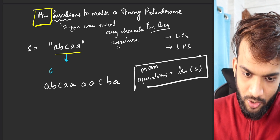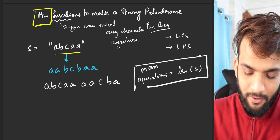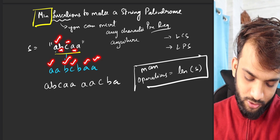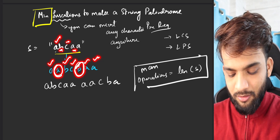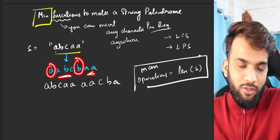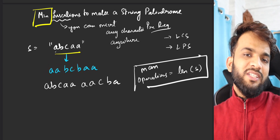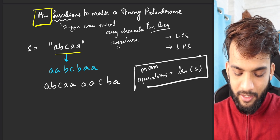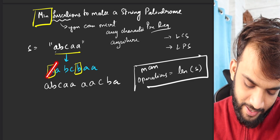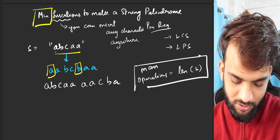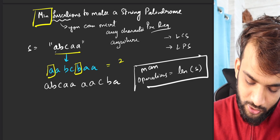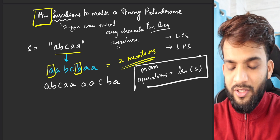A better way: convert A, B, C, double A into A, A, B, C, B, A, A. I kept the original characters and added just a single A and a B. Insertions can be done anywhere. Now checking: A-A matches, A-A matches, B-B matches, and C is the middle one — it is a palindrome! That required only two insertions, which is the minimum.